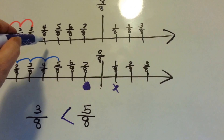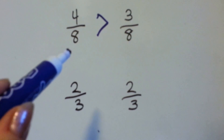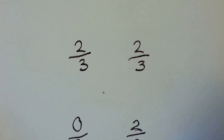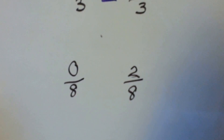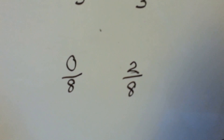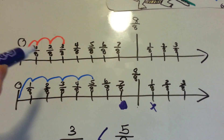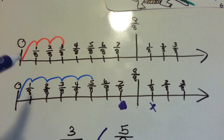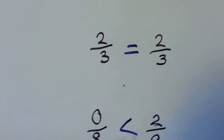Look — four-eighths is here, three-eighths is here. So four-eighths is farther on the number line. Two-thirds or two-thirds? Well, that's kind of silly — two-thirds and two-thirds are equal, aren't they? Yeah, they're the same. How about zero-eighths or two-eighths? Where would zero-eighths be? If this is one-eighth, zero-eighths would be at the zero mark. So zero-eighths is here and two-eighths is here. The two-eighths is farther, isn't it? So two-eighths is bigger.